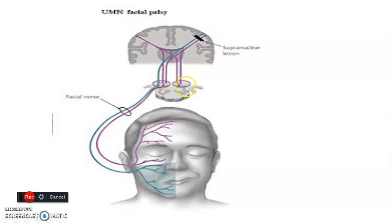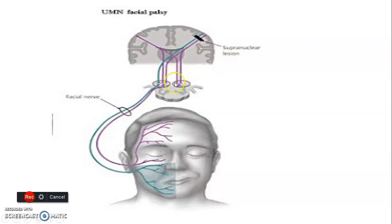The facial nuclei are in the brain stem but receive upper motor neurons from the cerebral cortex. Upper motor neurons to the upper part of the face get control from both cerebral cortices, while muscles in the lower part of the face are controlled by the cerebral cortex of the opposite side. So in an upper motor neuron lesion, the lower part of the contralateral side will be affected, and the upper part will be spared because it can still be controlled by the ipsilateral cortex.